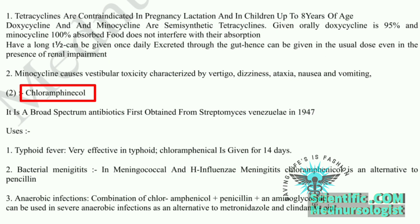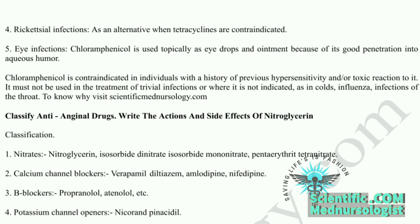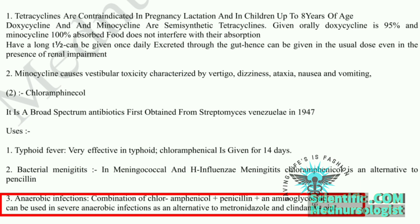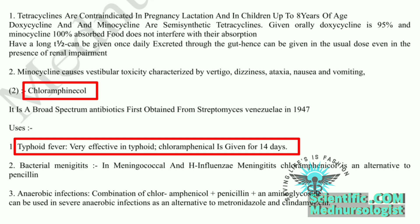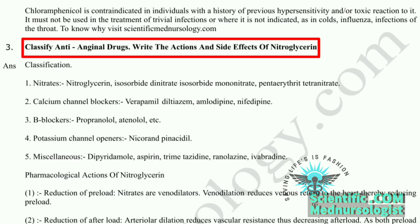Chloramphenicol is also a broad spectrum antibiotic. Its pharmacological uses include: first, rickettsial infections — can be used as an alternative when tetracyclines are contraindicated; it is used topically as eye drops and ointment due to its good penetration into aqueous humor. Second, anaerobic infections — a combination of chloramphenicol plus penicillin plus aminoglycoside can be used in severe anaerobic infections as an alternative to metronidazole and clindamycin. Third, bacterial meningitis — in meningococcal and H. influenzae meningitis, this drug is used as an alternative to penicillin. It is also very effective in typhoid and is given for 14 days.